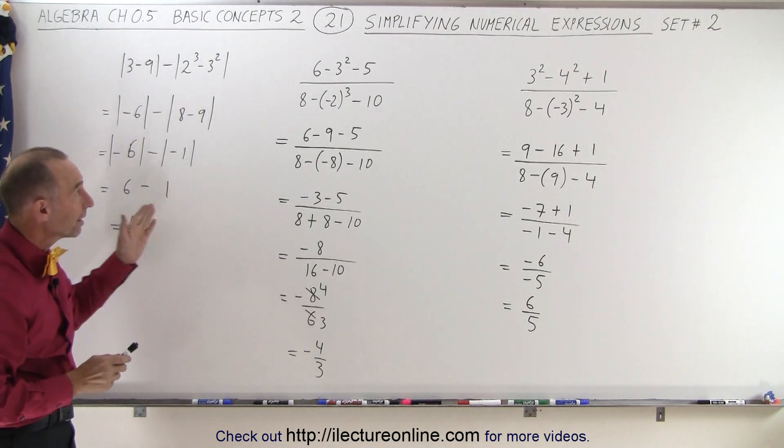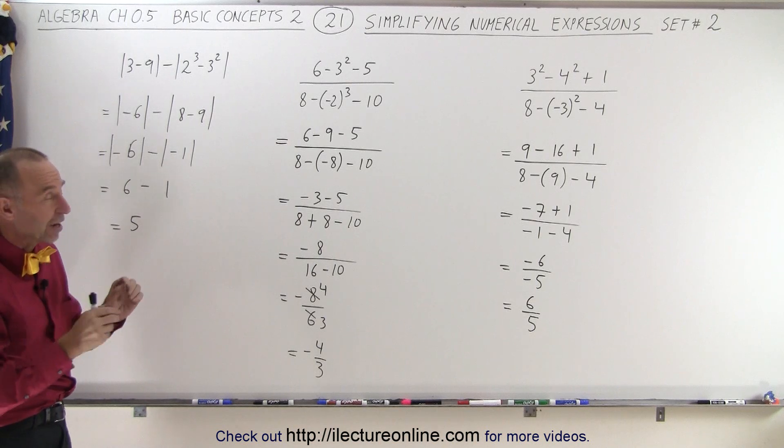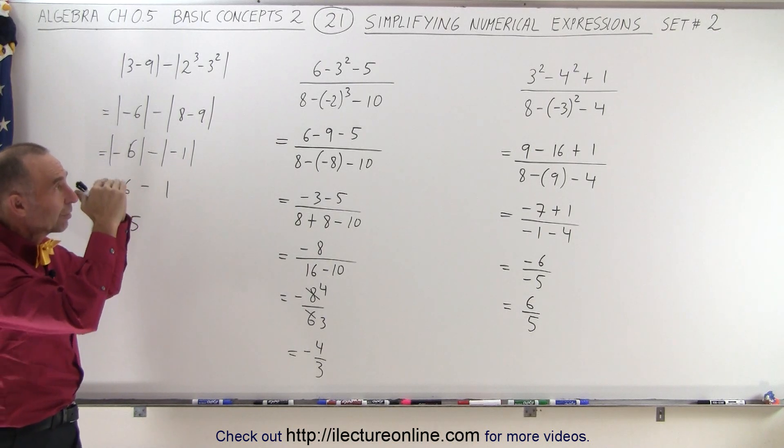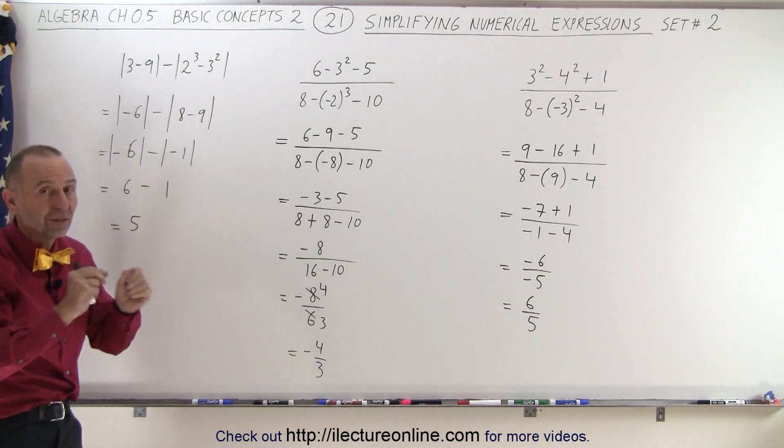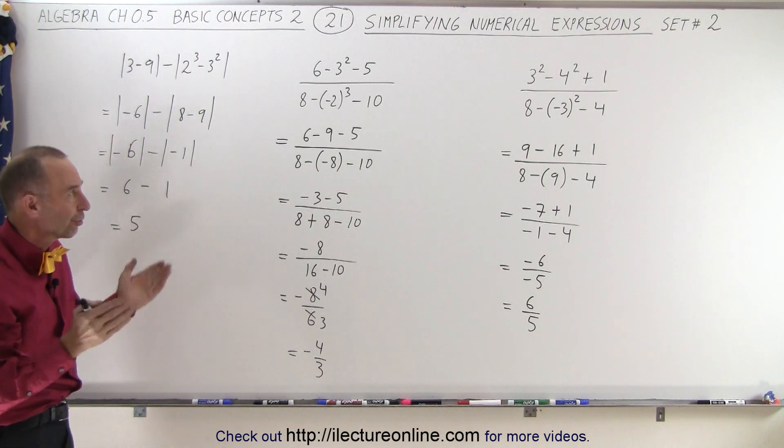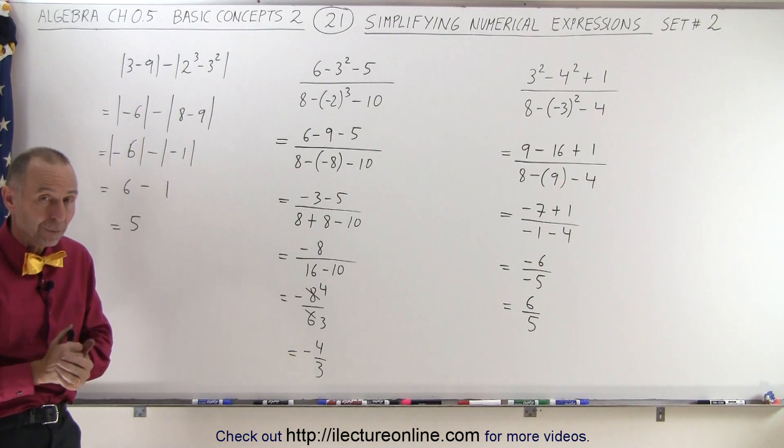Now 6 minus 1 is equal to 5. And that's the simplest form of my original expression. And so this is how you simplify these three. Simply follow the rules. When you have a fraction, simplify the numerator and simplify the denominator separately as if there were parentheses around them. Work what's there first before you combine the numerator and the denominator. And that is how it's done.